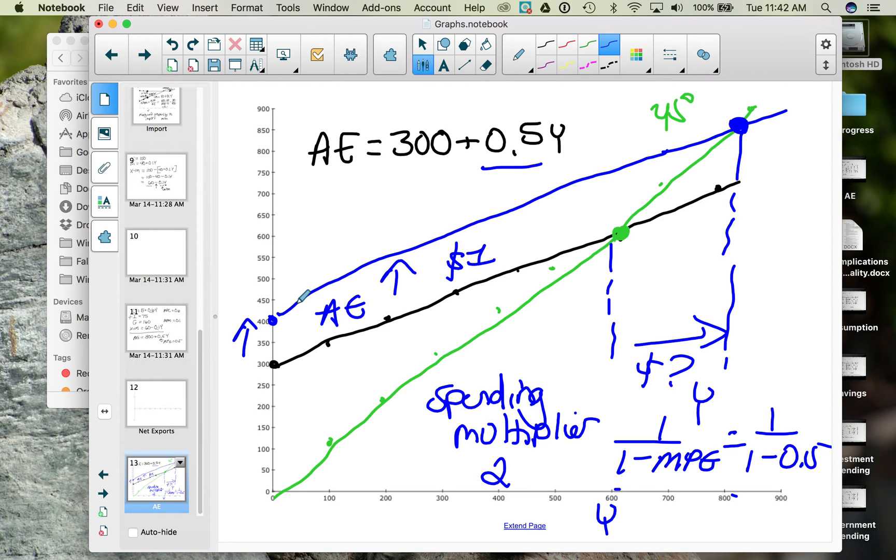That increase in income means they're going to spend more, which puts more income in someone else's pocket, which means that person spends more, and the impact ripples out. It's like throwing a pebble in a pond. If you skip a pebble, you see all those ripples that go out and out and out, and then eventually disappear. The same thing is true here.